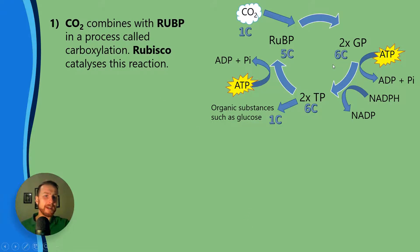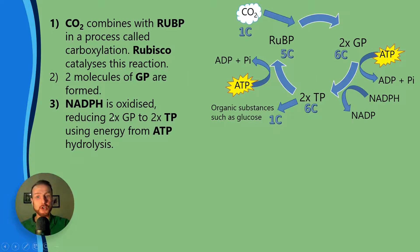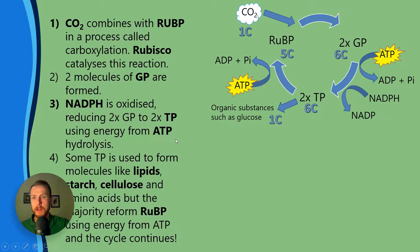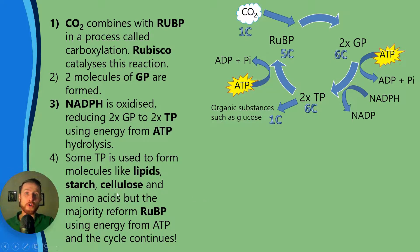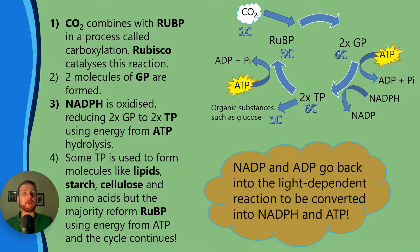In more detail: CO2 combines with RUBP in a process called carboxylation — Rubisco catalyzes this reaction. Two molecules of GP are formed. NADPH is oxidized, reducing two times GP to two times TP using energy from ATP hydrolysis. Some TP is used to form molecules like lipids, starch, cellulose and amino acids, but the majority reforms RUBP and the cycle continues. NADP and ADP go from the stroma back into the thylakoids where they're involved in the light dependent reaction. ATP is regenerated via photophosphorylation and NADP picks up hydrogens and electrons from the light dependent reaction to become reduced NADP.